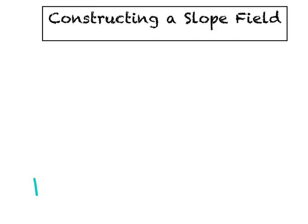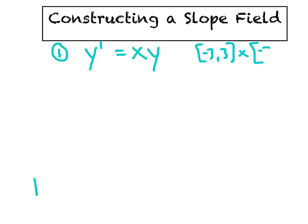Now we're going to actually build our first slope field. So far they've all been given to us. Generally these are worth two, maybe three points on a free response question — the easiest points you'll earn, but time-consuming. What if the differential equation is y′ = xy? Just as a side note, this is a separable DiffEQ — we could solve it analytically, getting all y's and dy's on the left and all x's and dx's on the right. But that's not what they're asking. They want us to use a domain of -3 to 3 and a range of -3 to 3, so here's how we build our slope field.